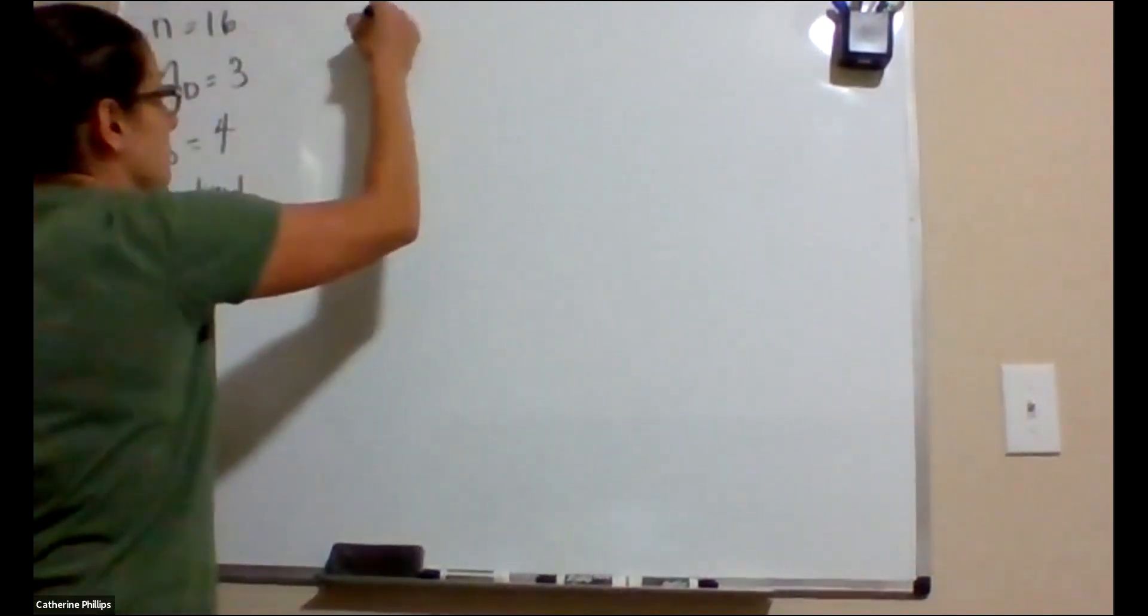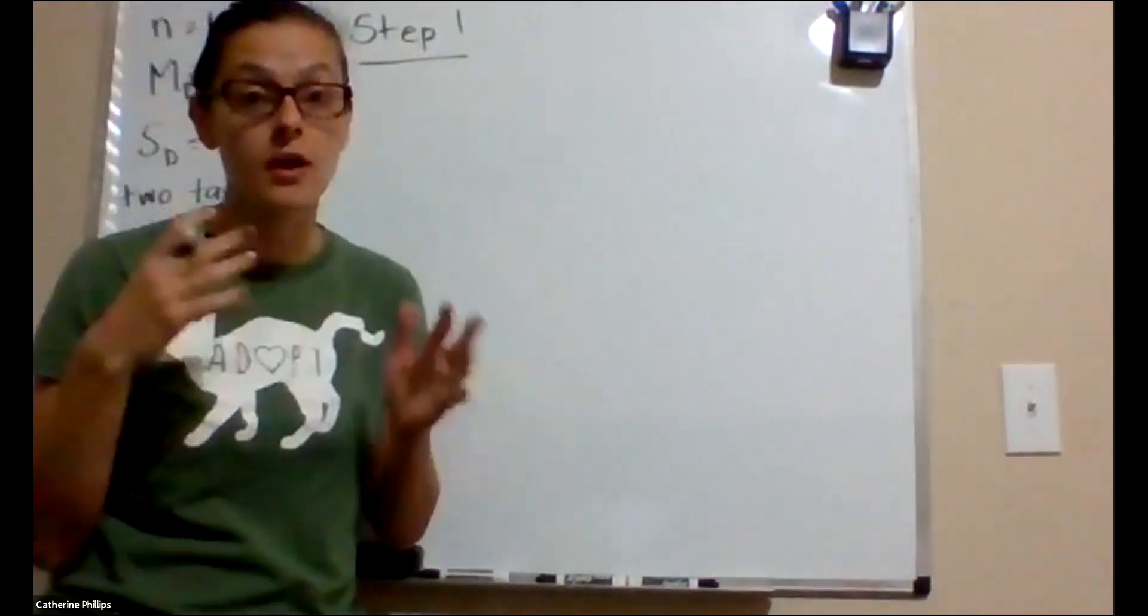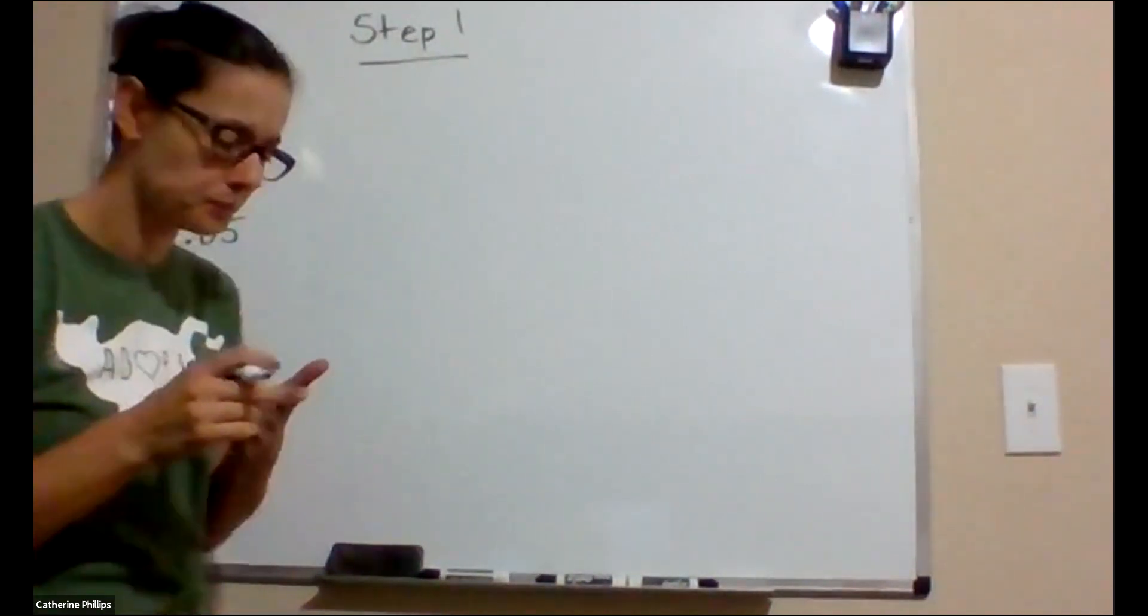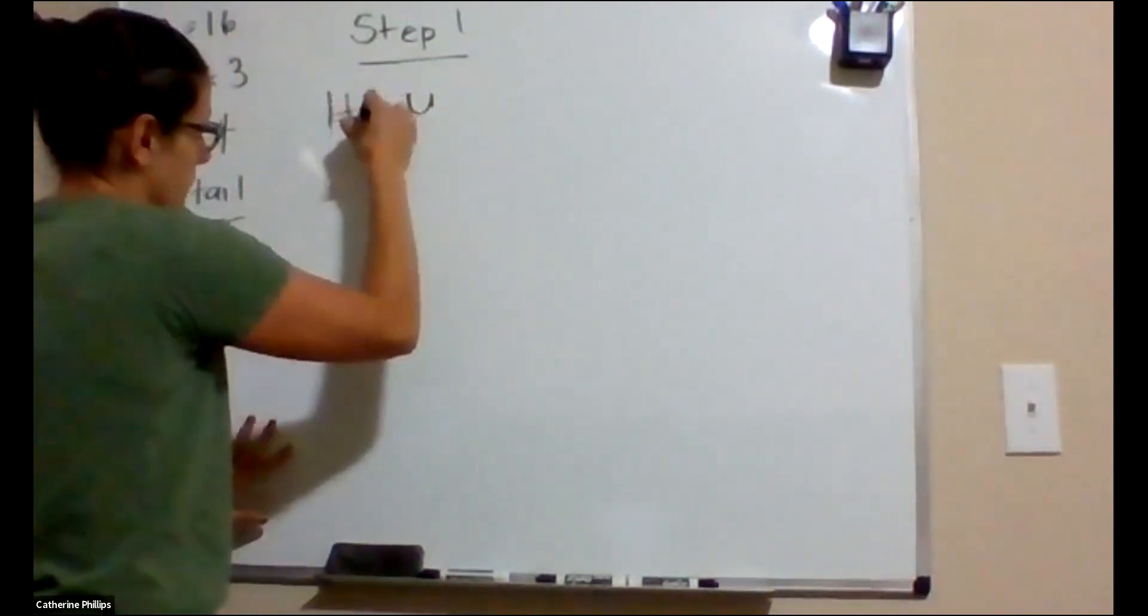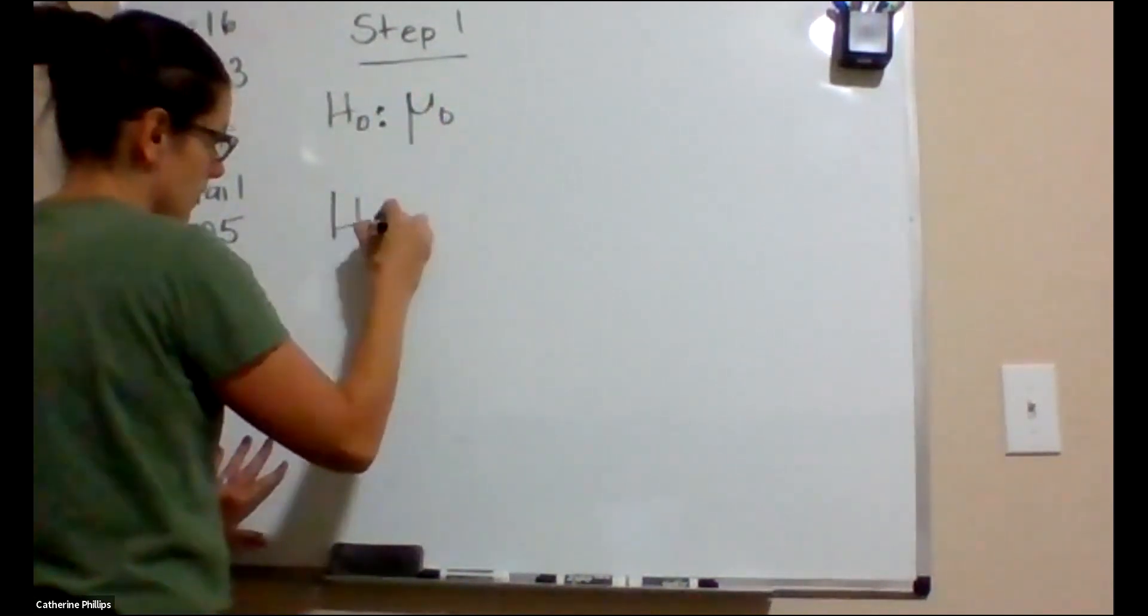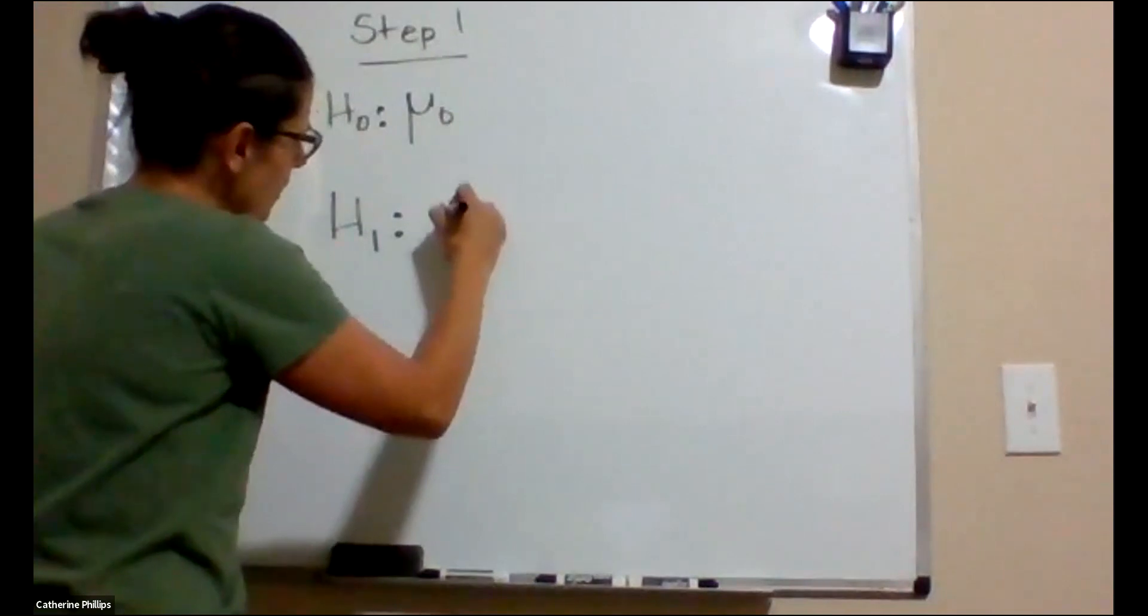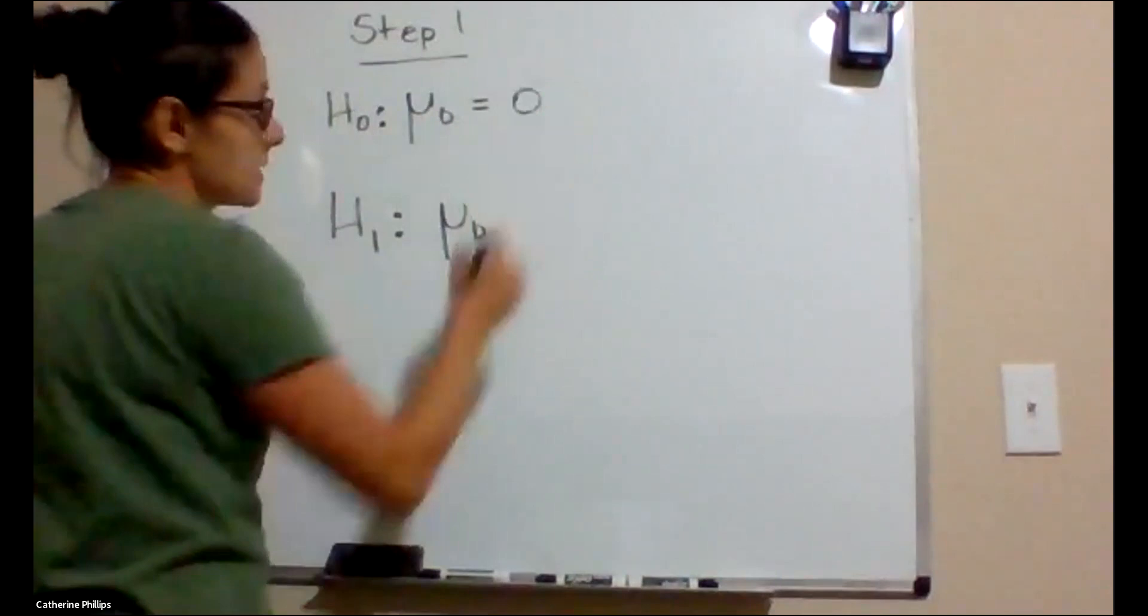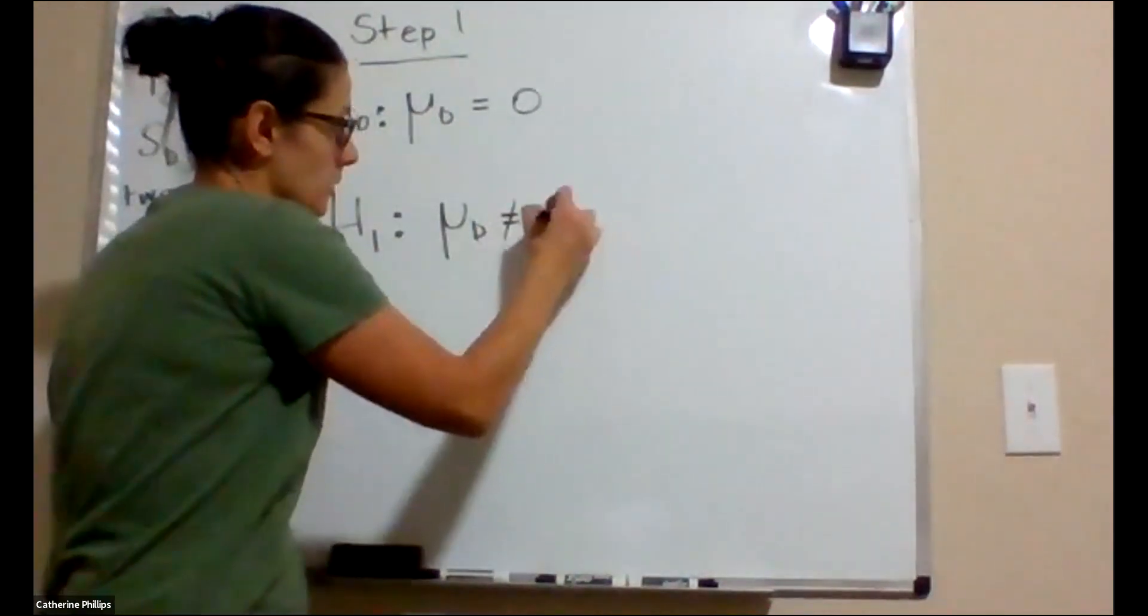Step one. We need to state our hypotheses. So we've got a two-tailed test. The hypothesis, the null, is about the mean difference. They're always about the mean difference. And the hypotheses always relate to the mean, the population values. So here, the null is that the mean difference is zero.